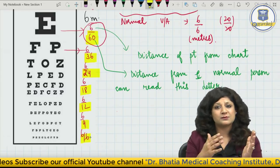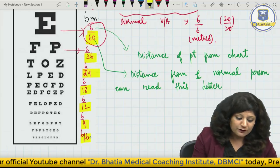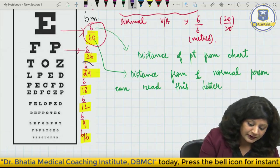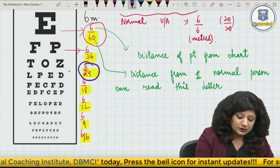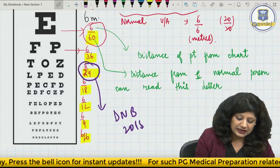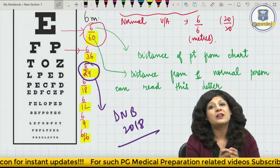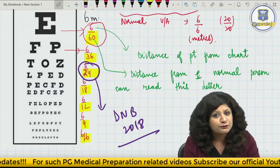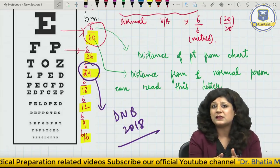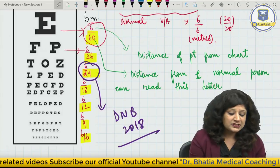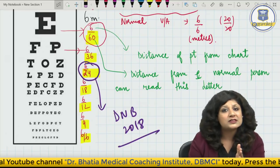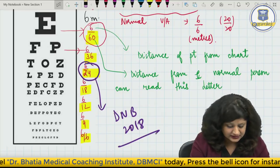For 6/36 it is 36 meters, and so on. If a person comes to you with a visual acuity of 6/24 — this question came in DNB 2018 — from how much distance can a normal person read this letter? The answer is 24 meters. From 24 meters, a normal person will read that line.